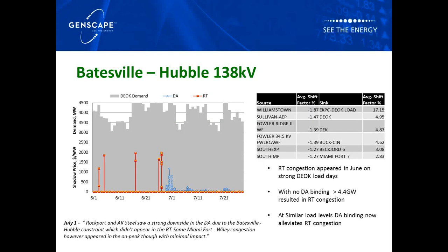Another example is Base Flow to Hubble. This was a constraint we saw quite a lot of at the beginning of the summer — mostly real-time shadow prices in June — and since then we've seen more of this constraint also in the day ahead since July. The best correlation we found is BOK load, shown as the gray shading. The story here is that PJM has really been managing this constraint more in the day ahead; it's something we see pretty much every day. So again, this is when you want to short the day ahead and have that as your more profitable position.